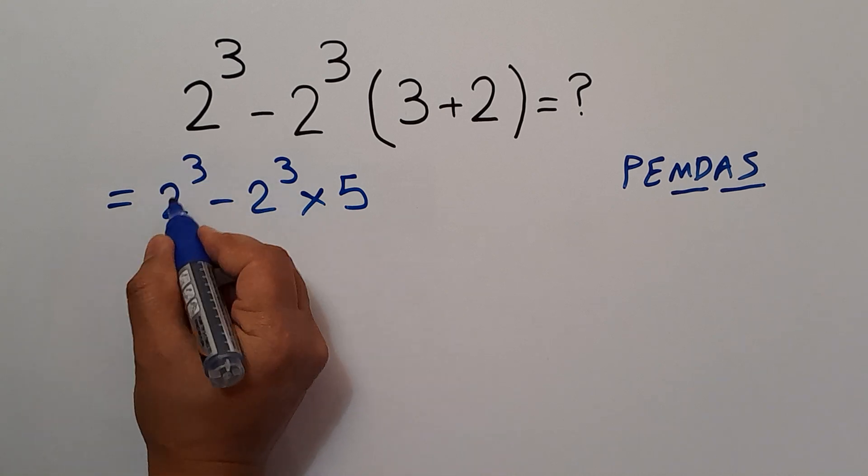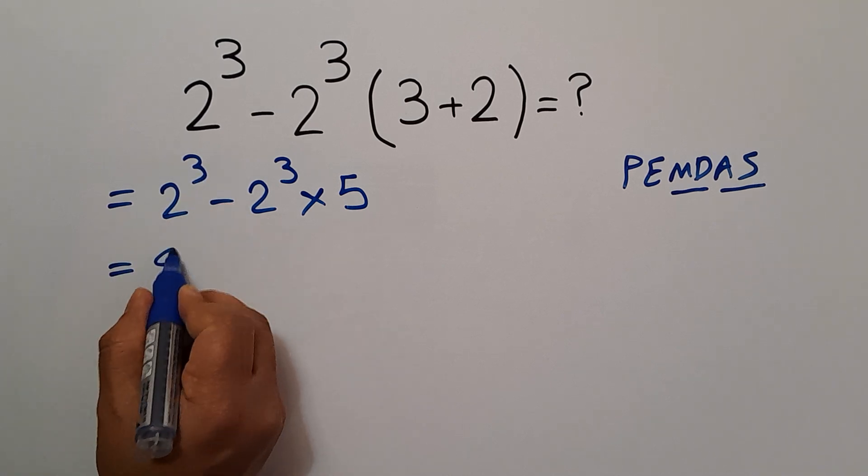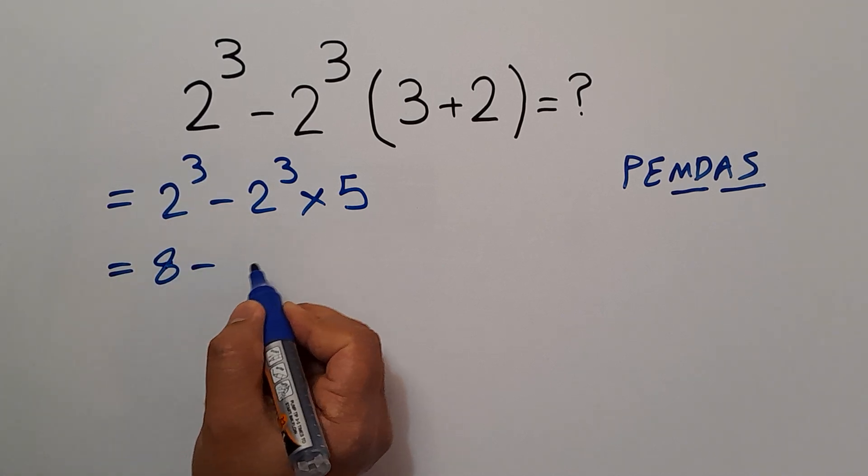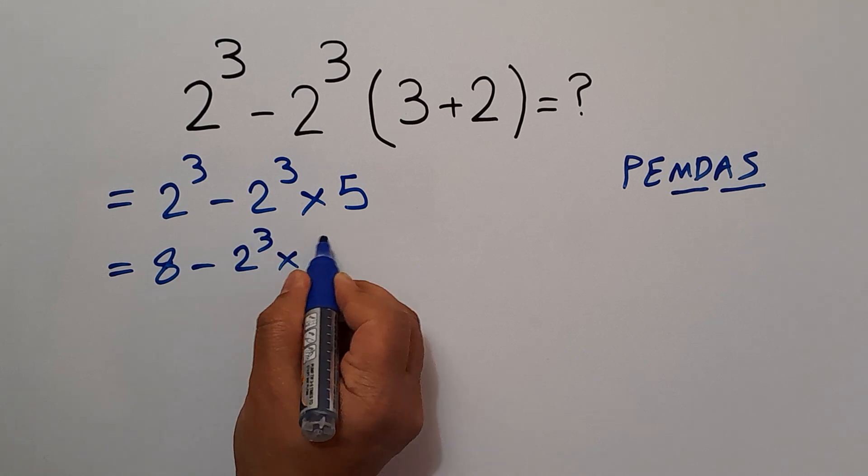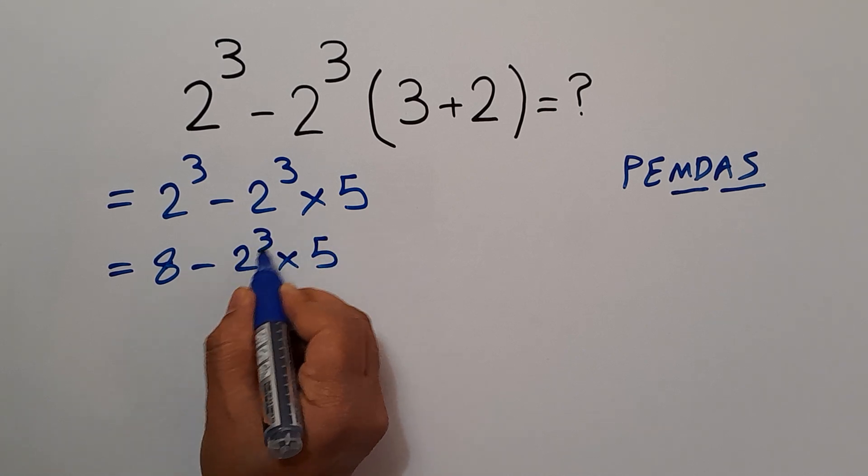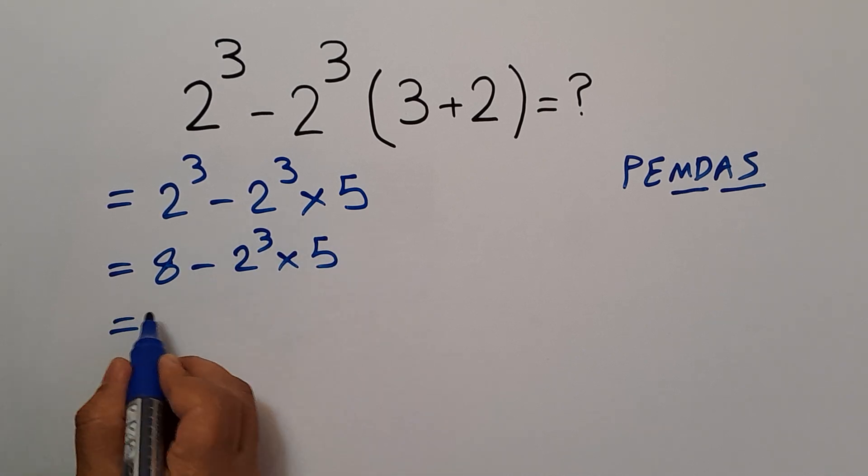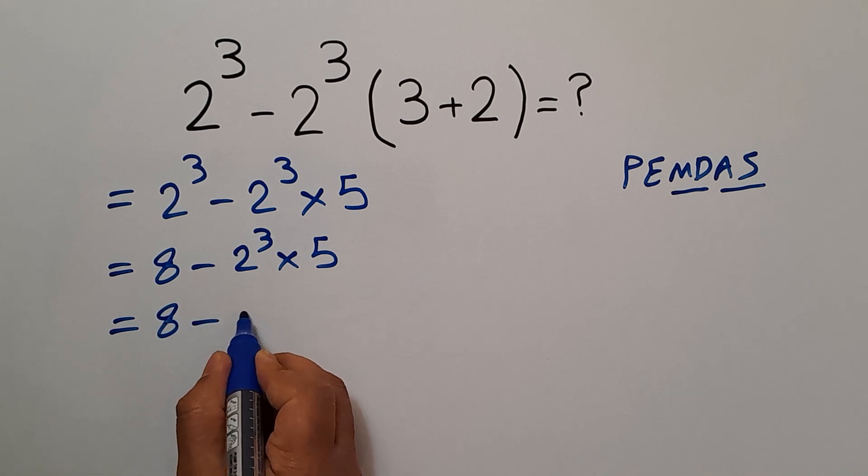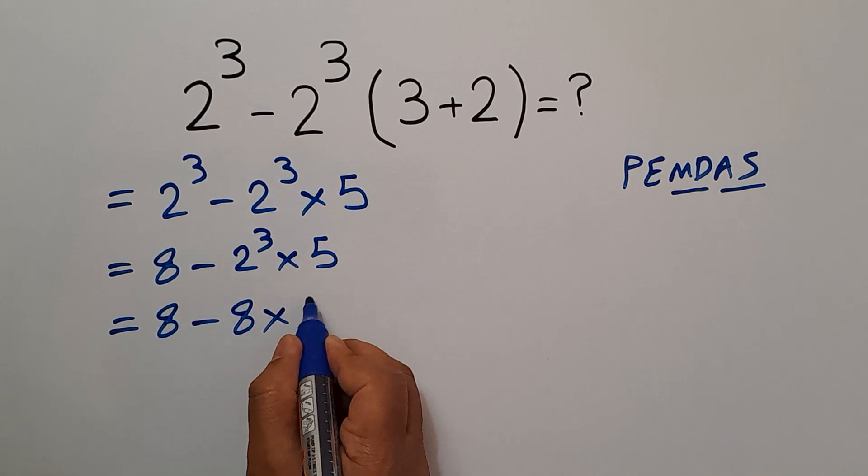First, this exponent. 2 cubed gives us 8. So 8 minus 2 cubed, then times 5. Again, 2 cubed gives us 8. So 8 minus 8, then times 5.